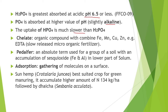Phosphate ion HPO₄²⁻ is absorbed at higher pH, meaning in slightly alkaline soil. The uptake of HPO₄²⁻ is much slower than H₂PO₄⁻. Next term is chelate. Chelates mean an organic molecule combines inorganic nutrients — like iron, manganese, copper, zinc — and an example is EDTA, ethylene diamine tetra acetic acid. Chelates slowly release these inorganic nutrients.